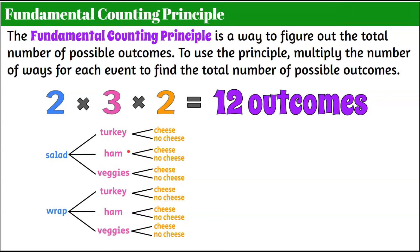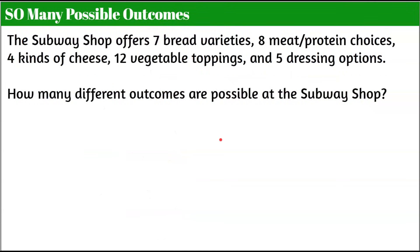One thing students make a mistake on here: when they look at a tree diagram, they count the branches at the second level as six. Remember, that second event did not have six choices — it was three choices. So two choices, three choices, two choices. Be careful when thinking about that. So 12 different outcomes. Sometimes there are so many possible outcomes that it would not be realistic to make a tree diagram — you'd need a huge billboard to have enough room.